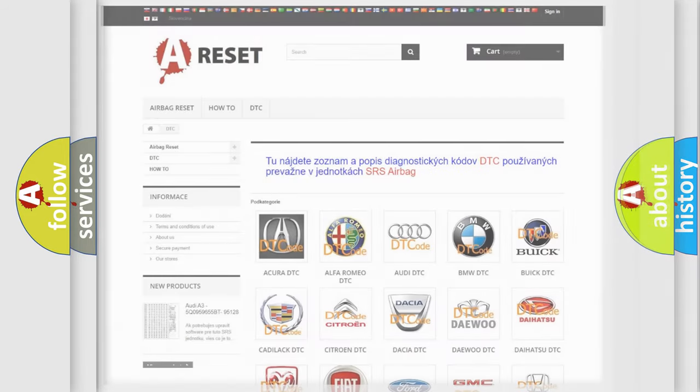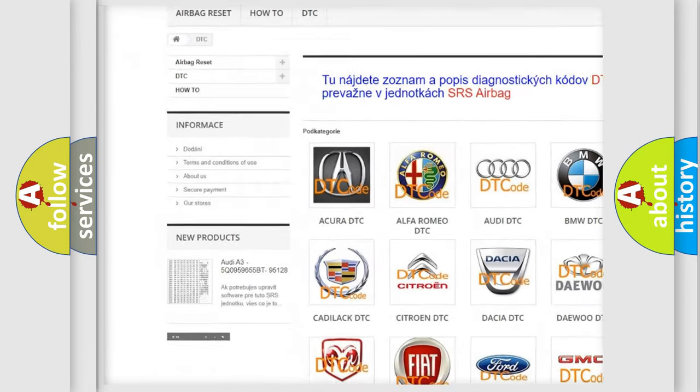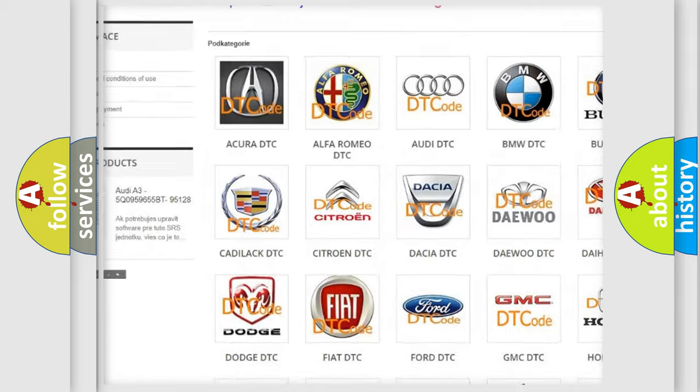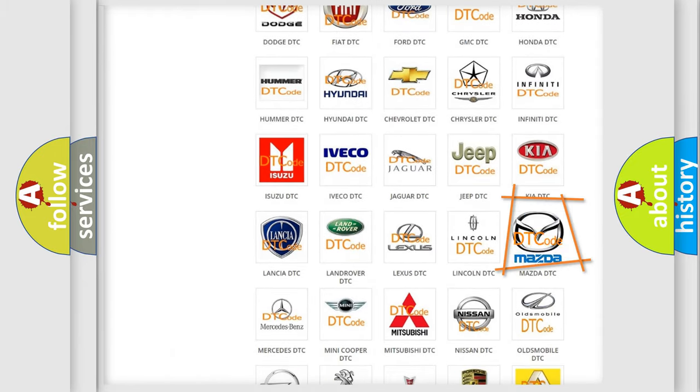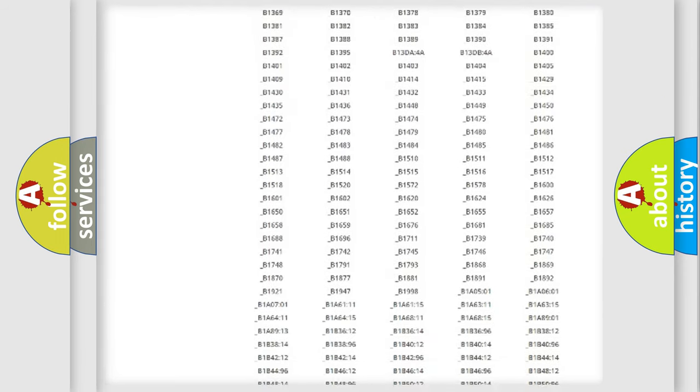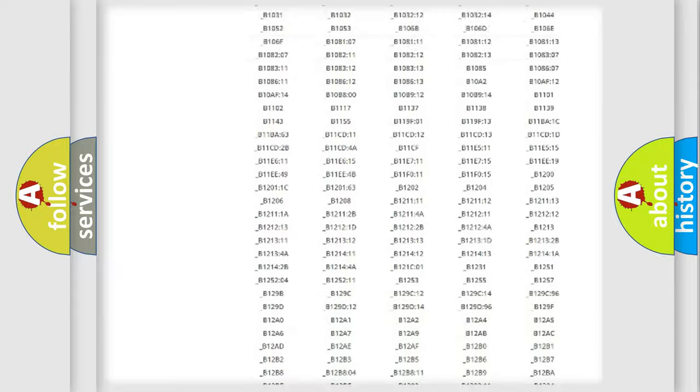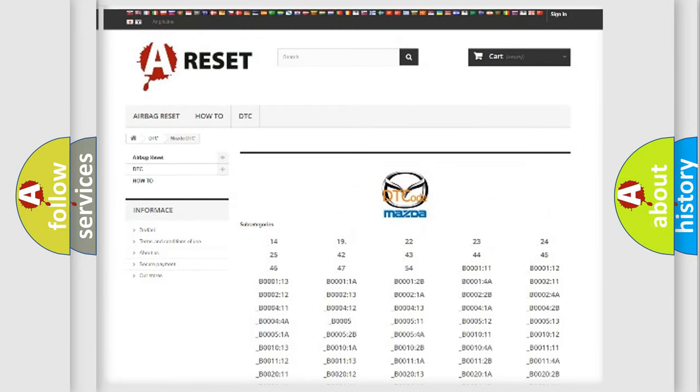Our website airbagreset.sk produces useful videos for you. You do not have to go through the OBD2 protocol anymore to know how to troubleshoot any car breakdown. You will find all the diagnostic codes that can be diagnosed in Mazda vehicles, and many other useful things.